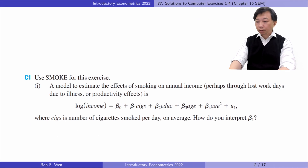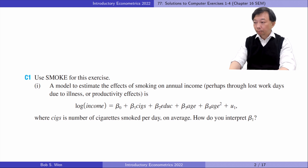Let's find answers to Computer Exercise 1. In Part 1, a model is used to estimate the effects of smoking on annual income, perhaps through lost workdays due to illness or productivity effects. Here, cigarettes is the number of cigarettes smoked per day on average. How do you interpret Beta 1?